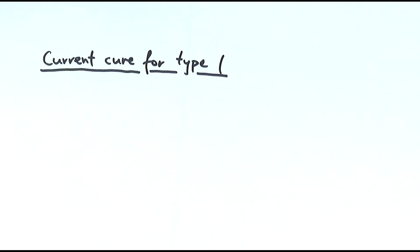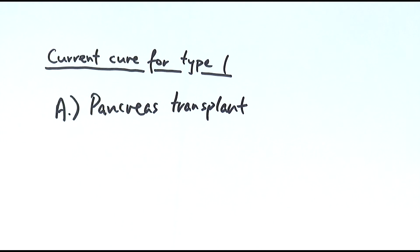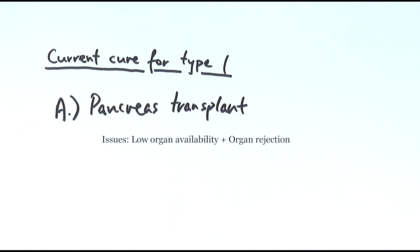Now let's look at stem cell treatment. First, a quick recap of the current options for type 1 diabetes — type 2 doesn't have much of a cure. We can have a pancreas transplant, giving the patient a new healthy pancreas. But two major problems are low availability of the organ and rejection — the immune system recognizes the antigens on the surface of the transplanted pancreas as foreign and tries to destroy it. Patients then have to take immunosuppressant drugs for their entire life to prevent this, which increases the risk of infections.